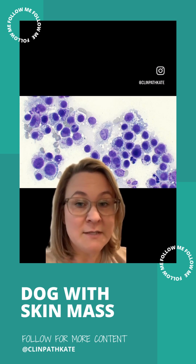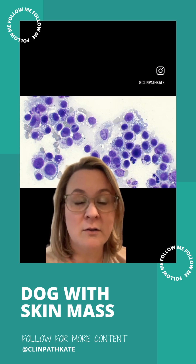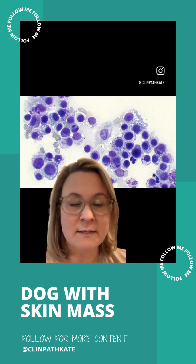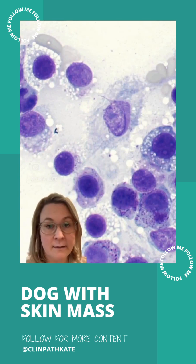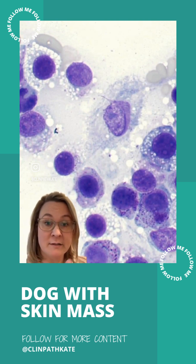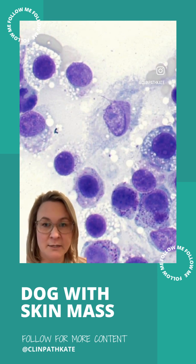Now we've got five options for round cell tumors, so we want to look closer and just see if we can get more characteristics of these cells to see what type they are. Now that we're closer, we can get a better feel of what types of features these cells have. There's a lot going on here, and there's some variability in how they look, but they're all the same population of neoplastic round cells.